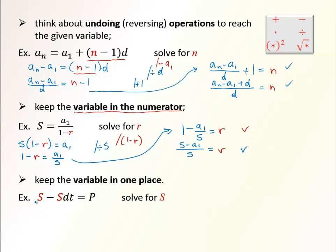In the following example, we have our variable in two different places. It is in the numerator, but it's in two different places. So the strategy here that we use is factoring. Keep your variable in one place, usually by factoring. So let's factor S out. And then we have 1 from the first term minus dt equals P. So now it's enough to divide by this bracket to the other side, and we have the final answer as S equals P/(1 minus dt).